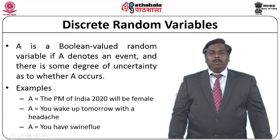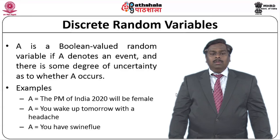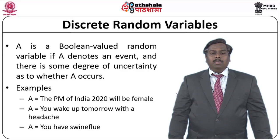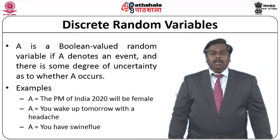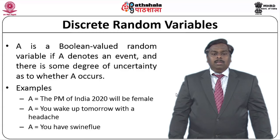Let us start with the fundamentals behind probability theory. What is a discrete random variable? We can consider a variable A, which is Boolean-valued, as a random variable if A denotes an event and there is some degree of uncertainty as to whether A occurs or not. For example, A can be a random variable associated to who will be the PM of India in 2020, or whether the PM of India in 2020 will be a female, or whether you will wake up tomorrow with a headache, or A can indicate you having a swine flu.